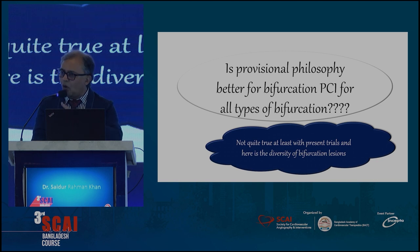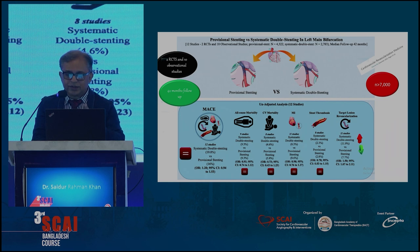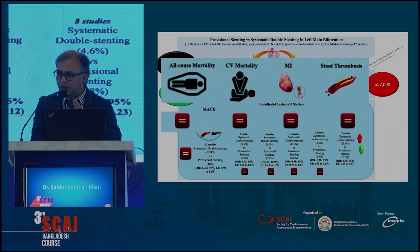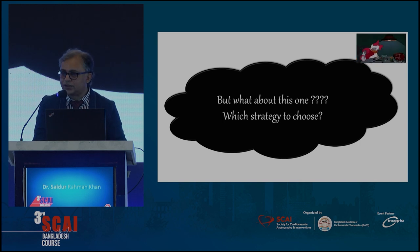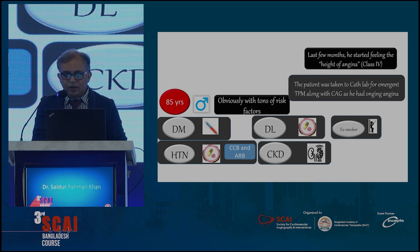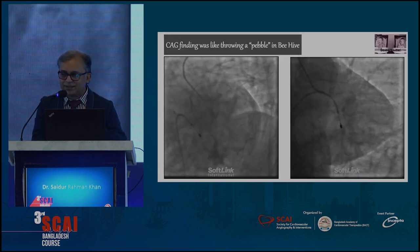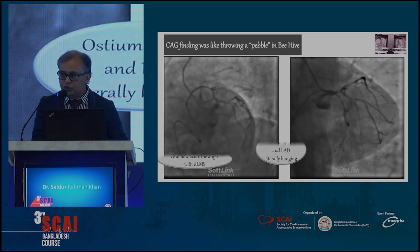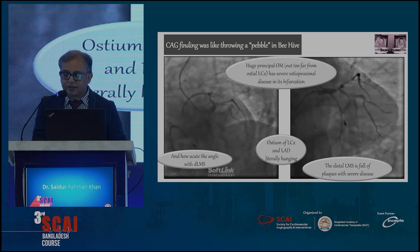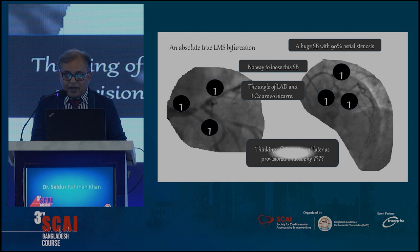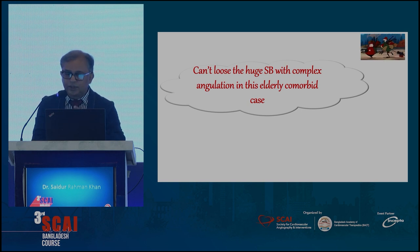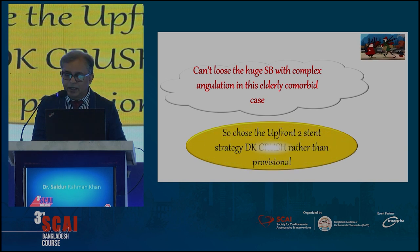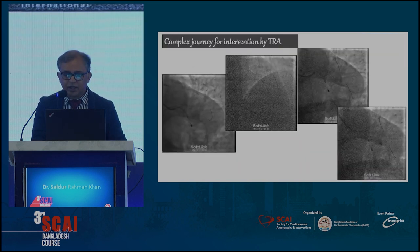A meta-analysis of 12 studies — 10 observational and 2 RCTs — shows that two-stent is less preferred than provisional philosophy overall. But what about this case: an 85-year-old male with a catastrophic angiogram showing a true left main bifurcation fulfilling the definition criteria? The side branch is not possible to lose given the complex angulation in this elderly, comorbid patient — so we chose an upfront two-stent strategy using DK crush rather than provisional.